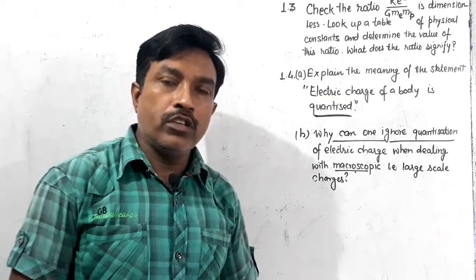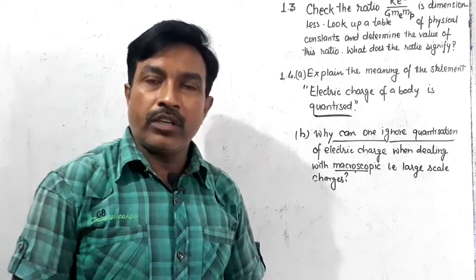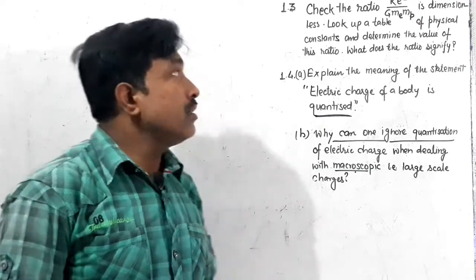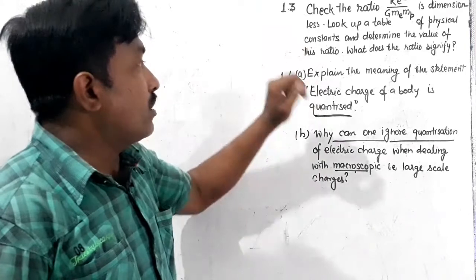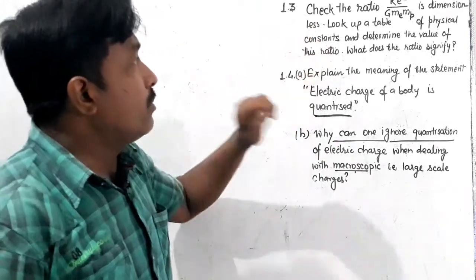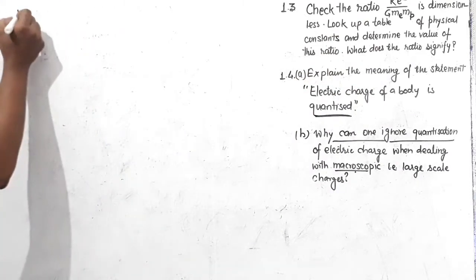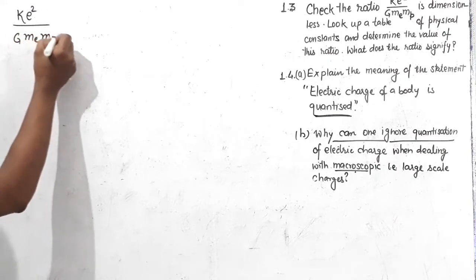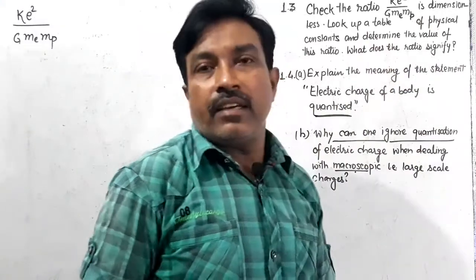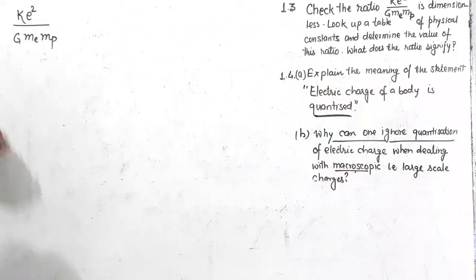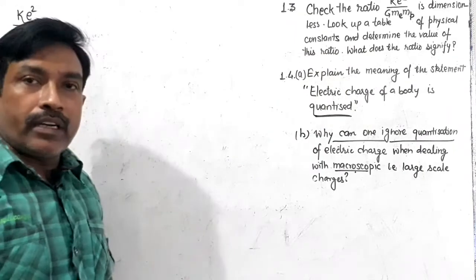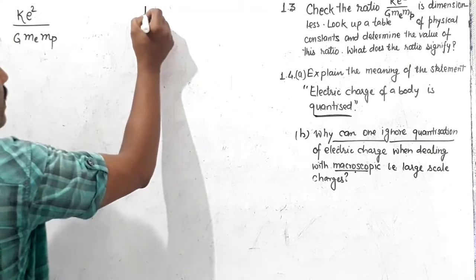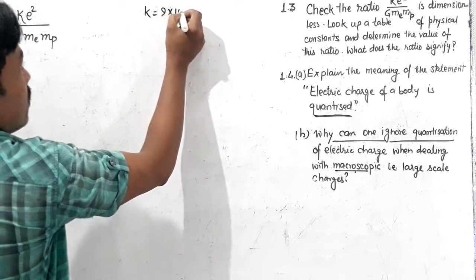Hello students, today we will discuss two important questions from the first chapter of the Physics NCERT textbook — Question 1.3 and 1.4. Question 1.3 asks us to check whether the ratio ke² / (G·me·mp) is dimensionless. To prove this quantity is dimensionless, we need to write down the dimensions of all the values involved.